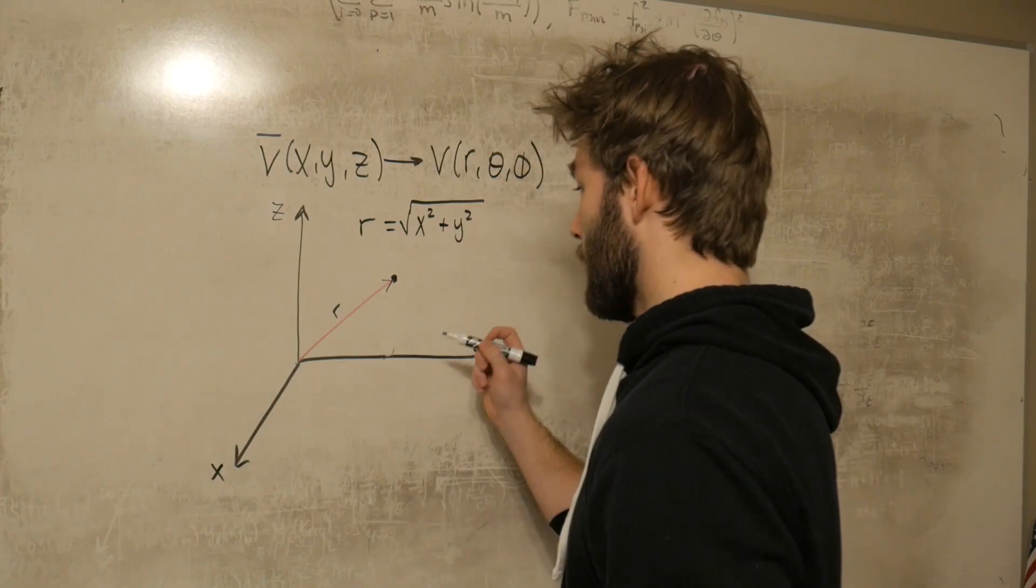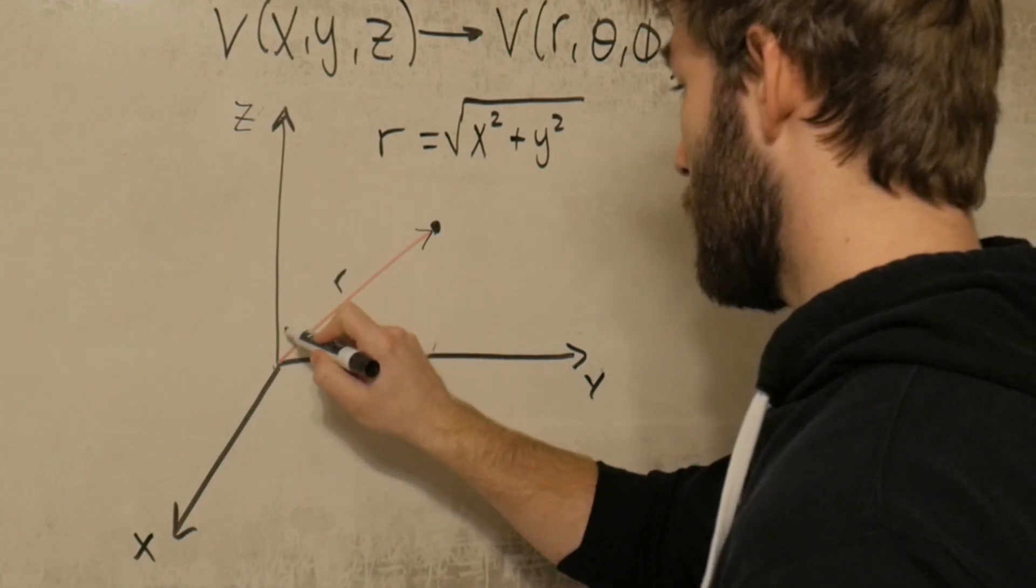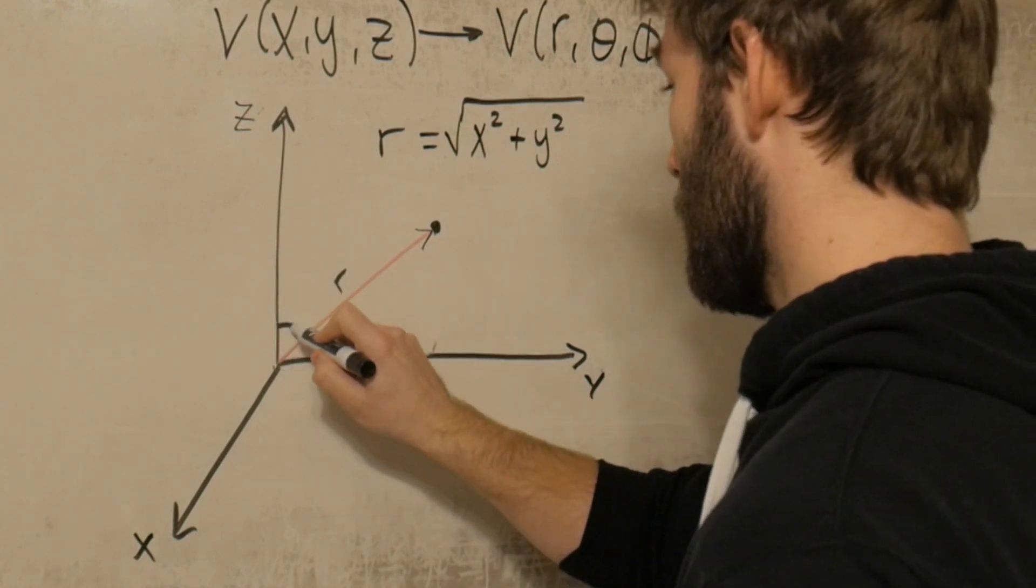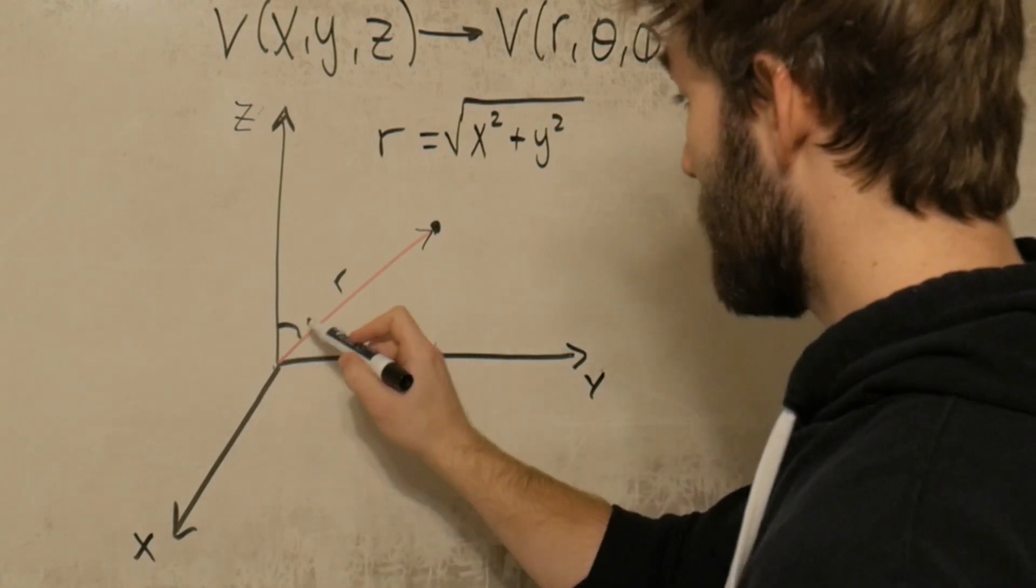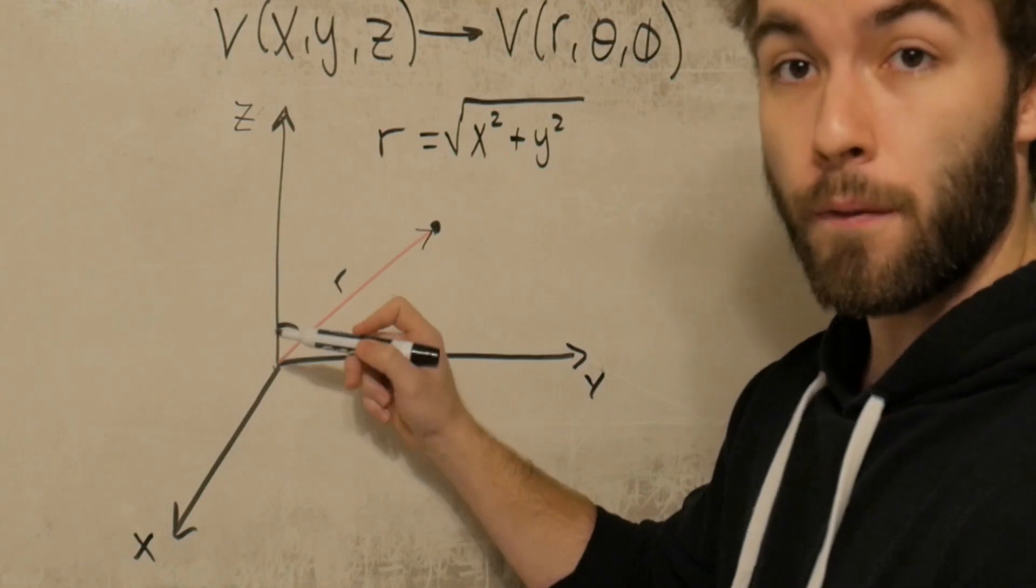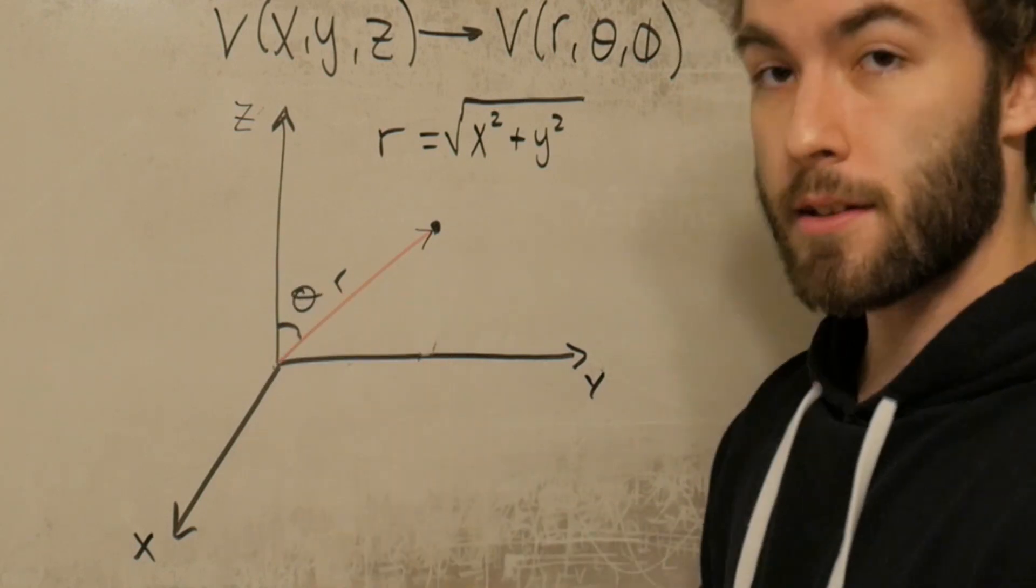The other quantities that we need to define here are the angle from the z axis to that r vector here. And this is where physicists and mathematicians disagree on what the angle is, because a mathematician will call this angle phi, and a physicist will call this angle theta. And that's what we're going to use.